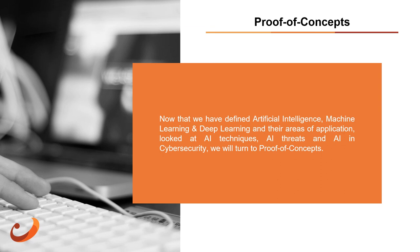Now that we have defined artificial intelligence, machine learning, and deep learning, and their areas of application, looked at AI techniques, AI threats, and AI in cybersecurity, we will turn to proof of concepts. The steps needed to create and run a machine learning algorithm include: data exploration, data pre-processing, splitting data for training and testing, preparing the model, assembling all the steps, training the model, and finally running prediction and evaluation.